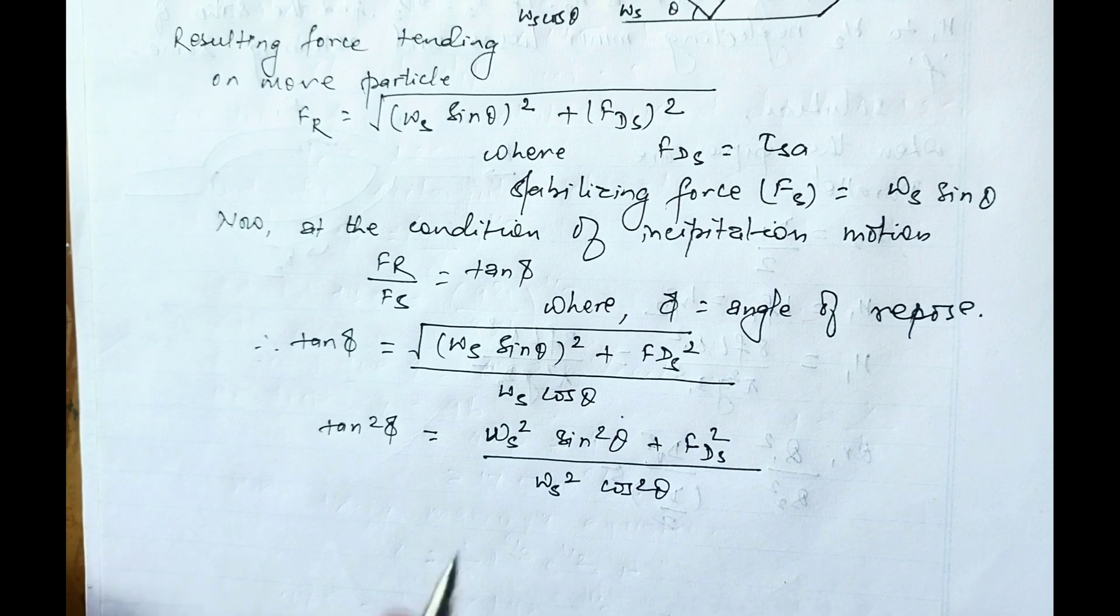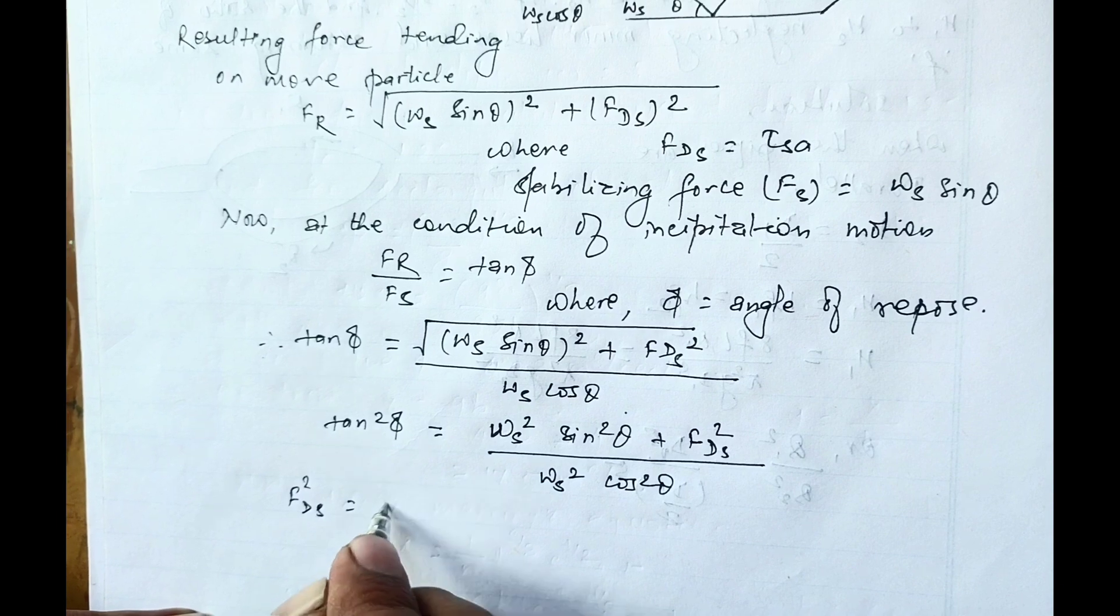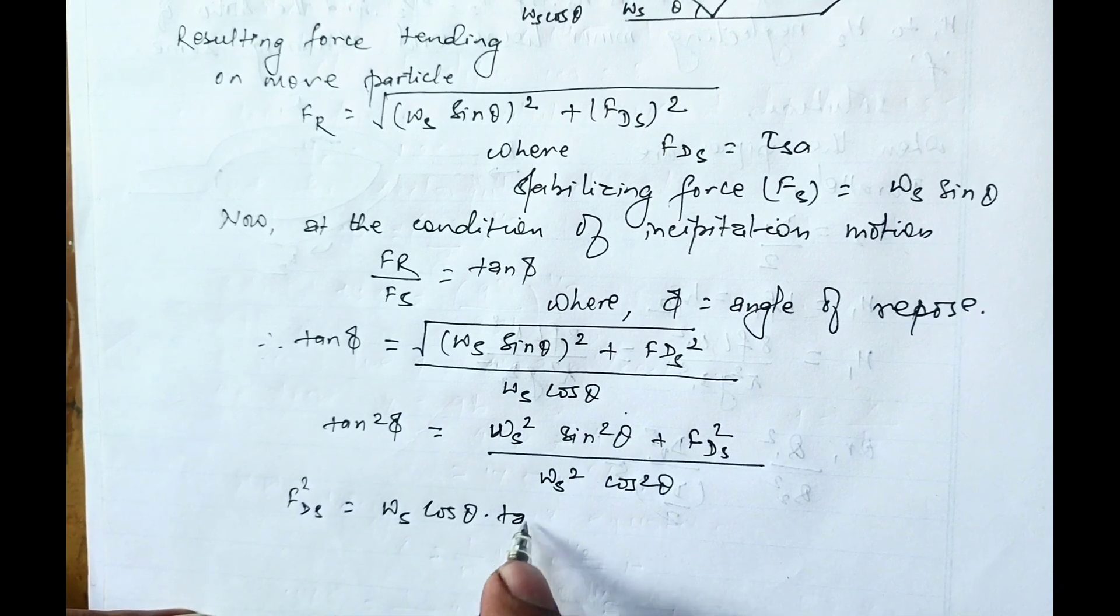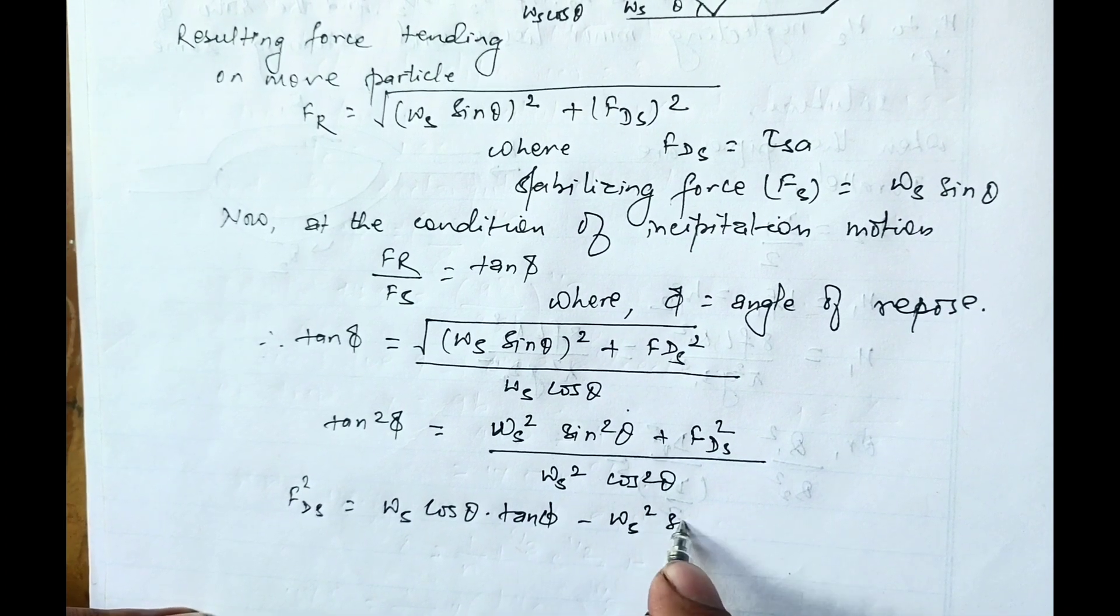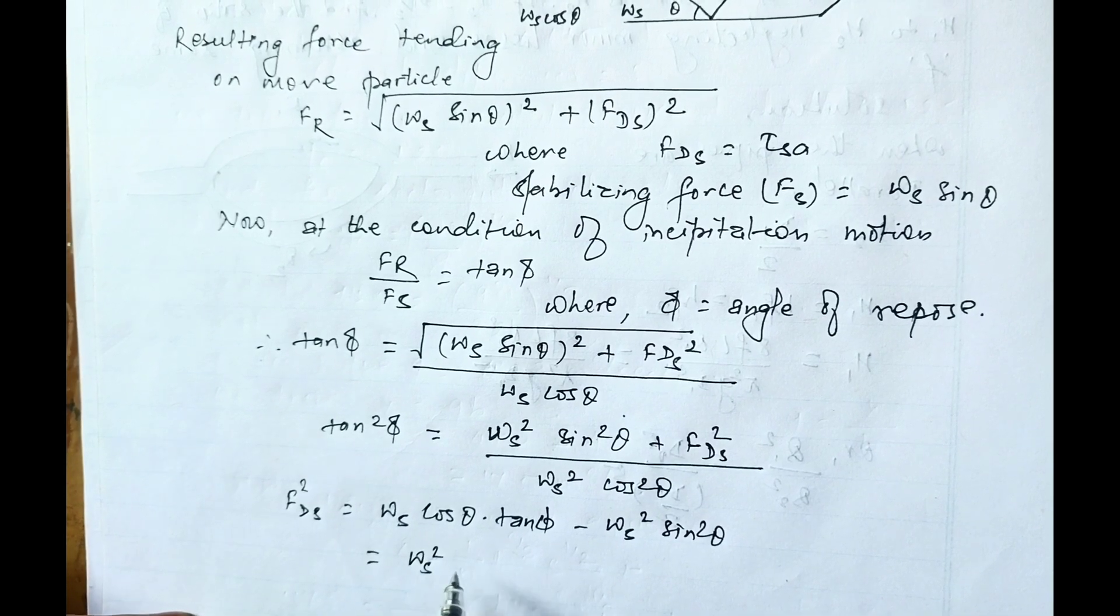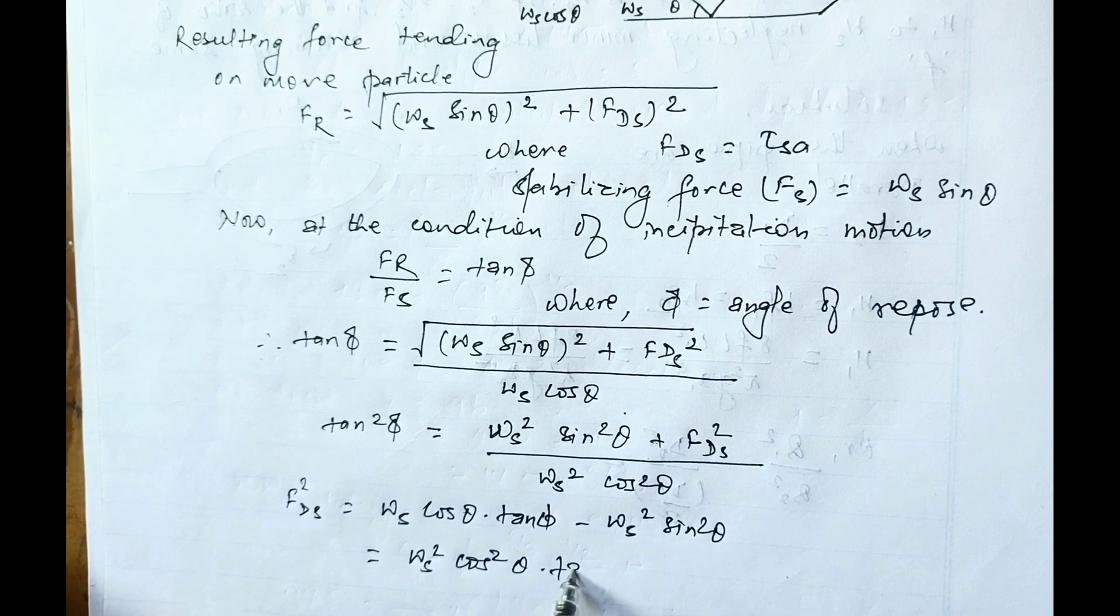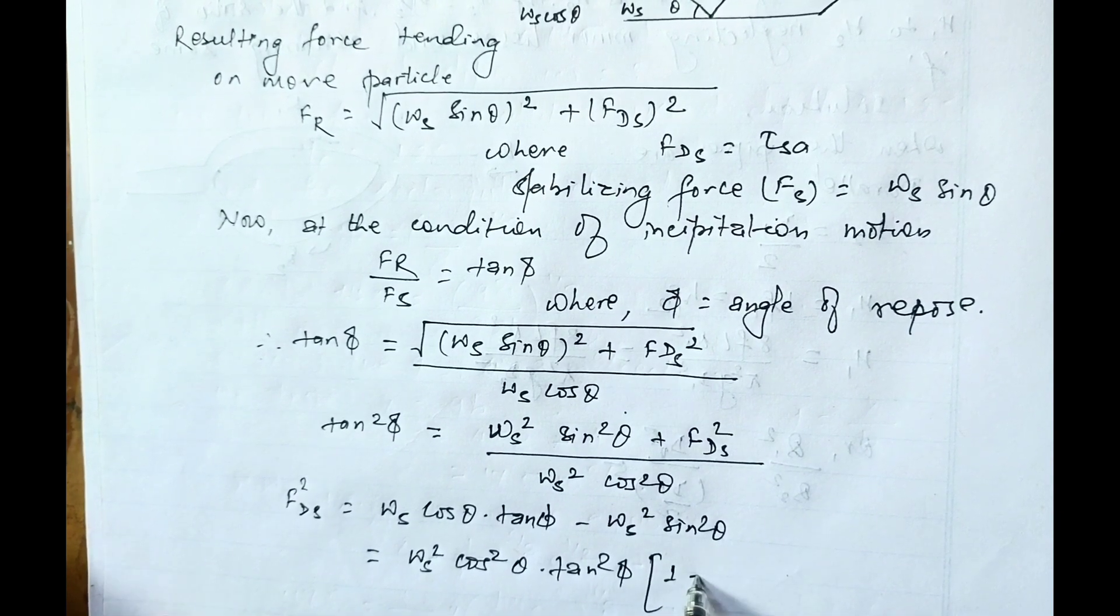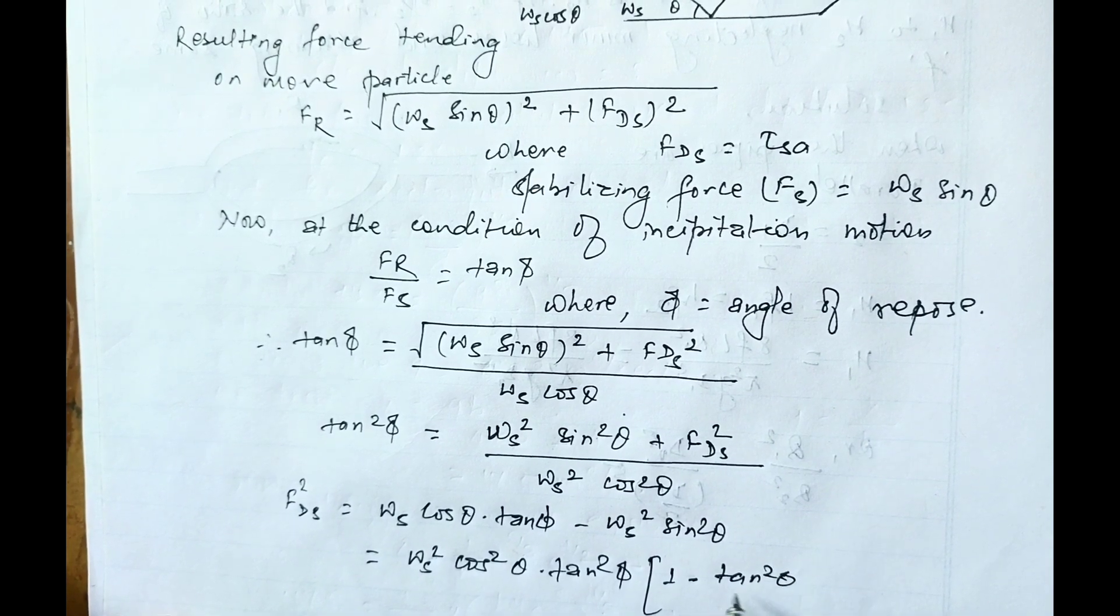On simplifying, FDS equals WS cos theta dot tan phi, which simplifies to WS squared cos squared theta dot tan squared phi times one minus tan squared theta divided by tan squared phi.